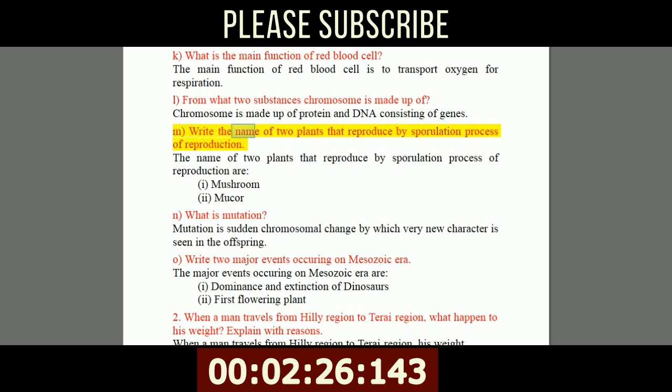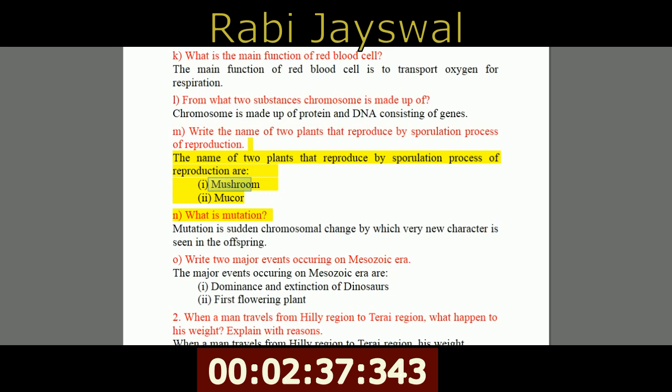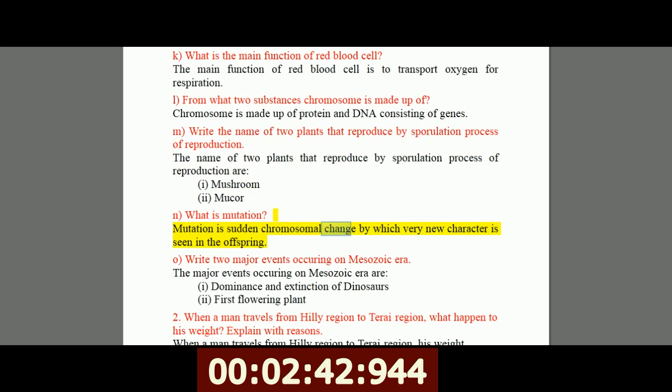M, write the name of two plants that reproduce by sporulation process of reproduction. The name of two plants that reproduce by sporulation process of reproduction are: I, mushroom, II, mucor. N, what is mutation? Mutation is sudden chromosomal change by which very new character is seen in the offspring.